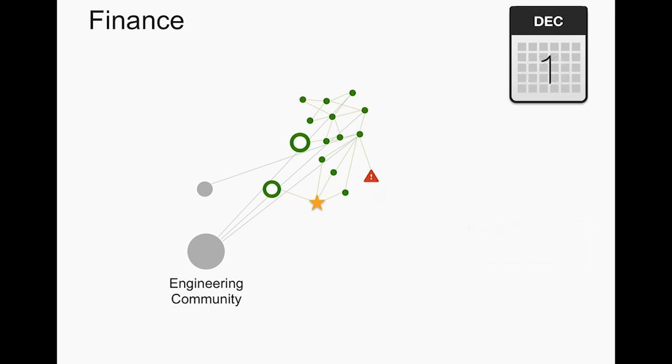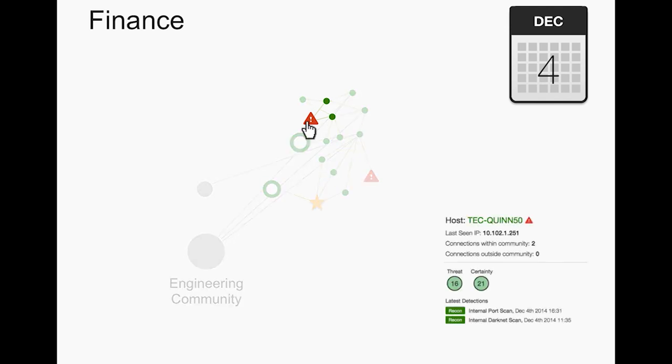Now we can watch this community over a period of days and the community is staying very stable, so this is a nice predictable network, all until December 3rd when we see a new detection, a new host that is now showing signs of an attack. So just like we did in the previous example we can click on this node and see what's going on really quickly.